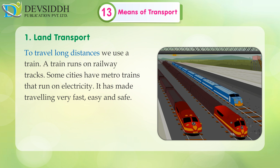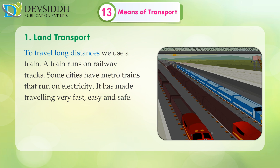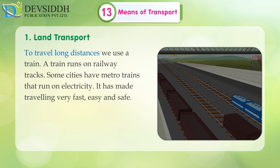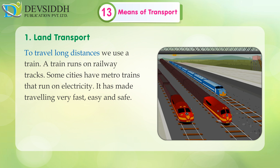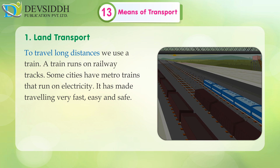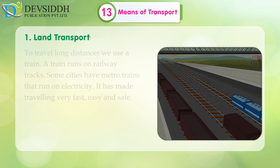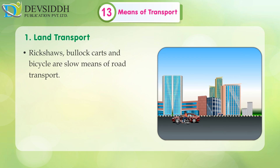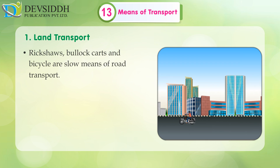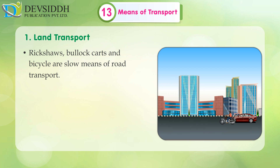To travel long distances, we use a train. A train runs on railway tracks. Some cities have metro trains that run on electricity. It has made travelling very fast, easy and safe. Rickshaws, bullock carts and bicycles are slow means of road transport.